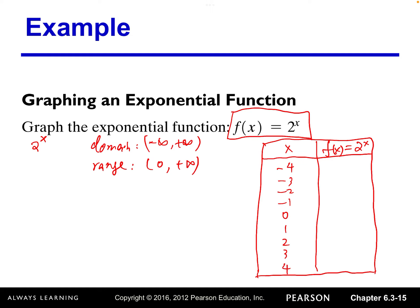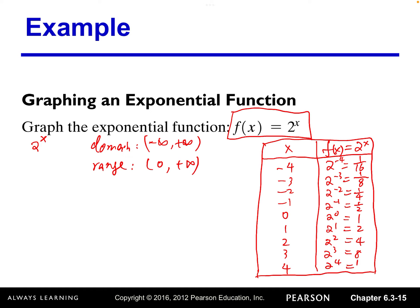When x equals negative 4, 2 to the negative 4 power is 1 over 2 to the 4th, which is 1/16. When x equals negative 3, that's 1 over 8. Then 2 to the first power is 2, 2 to the second power is 4, 2 to the third power is 8, and 2 to the fourth power is 16.